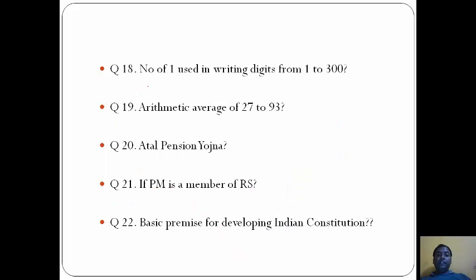Number of 1 used in writing digits from 1 to 300. The answer here will be 160. How we solve it? We count from 1, 10, 11, 12 and so on. From 1 to 10 it's 2 digits. From 11 to 19 it's 9. Then from 21, 31, 41 and so on. When we calculate all, we get total one digit used is 160 times.